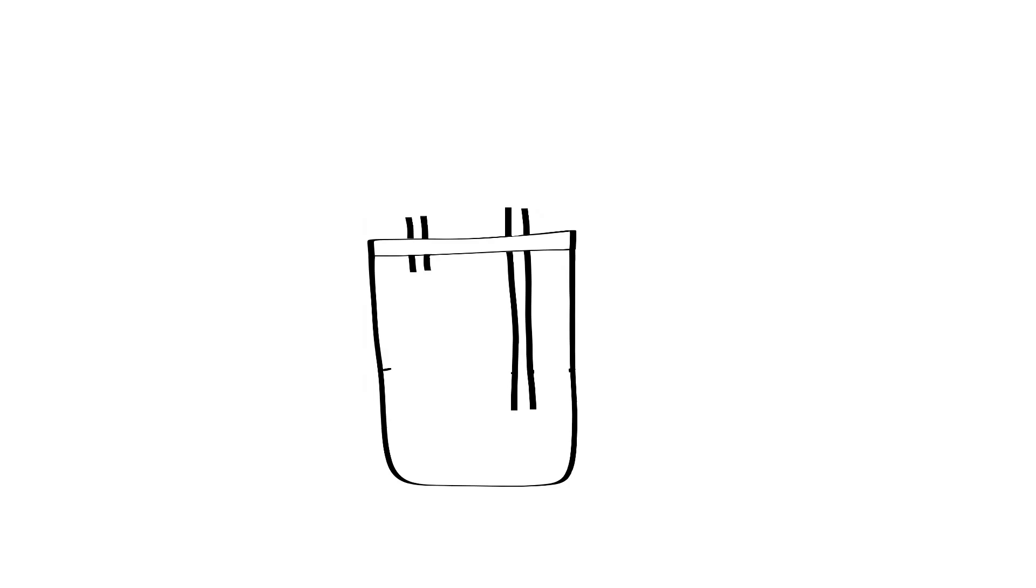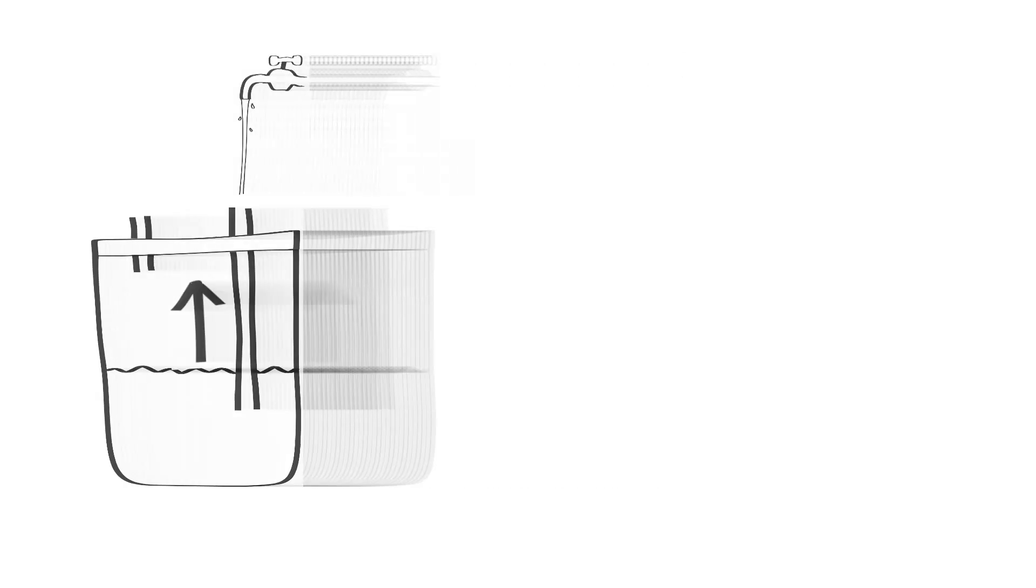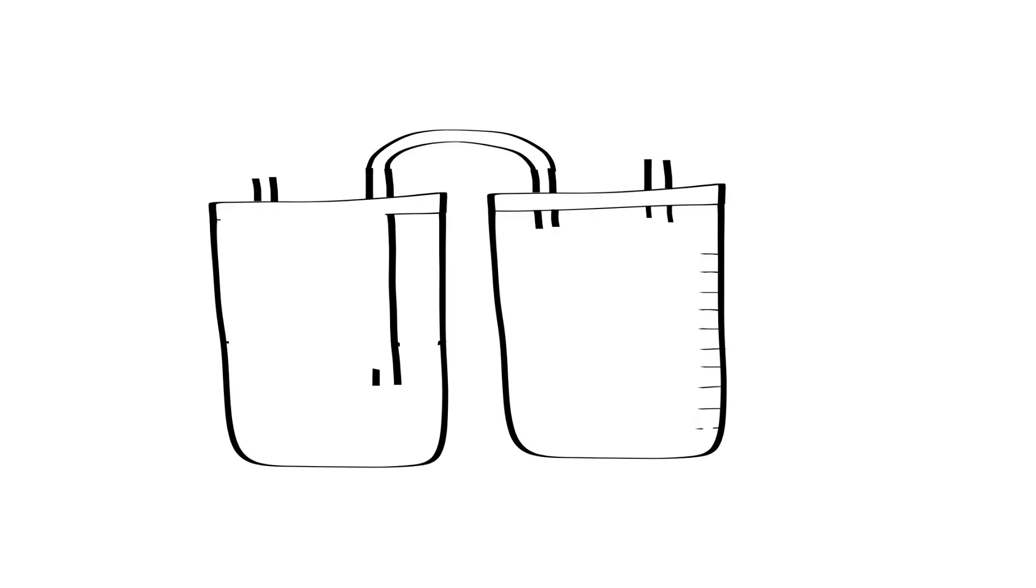The problem with a single chamber chest drain is that any fluid that drains into the chamber will raise the level of the underwater seal, making it progressively harder for a pneumothorax to drain. To fix this problem, a fluid collection chamber can be added prior to the underwater seal chamber. This allows fluid to drain freely and be measured in a separate chamber from the underwater seal.